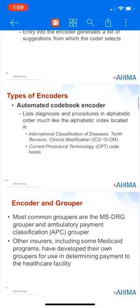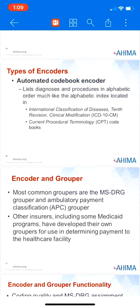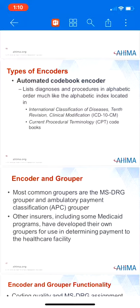The second is an automated codebook encoder. It lists diagnoses and procedures in alphabetical order, much like the alphabetic index located in the ICD-10-CM and the CPT codebooks. This similarity eases the transition from the book to the encoder. The grouper is a computer program that uses specific data elements to assign the diagnostic and procedural codes entered into the encoder into appropriate Medicare severity diagnostic related groups — your MS-DRGs or other diagnostic related groups.